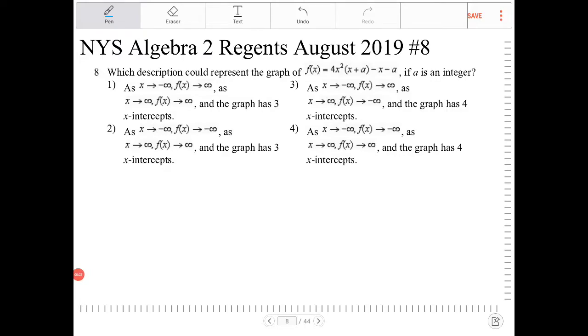Which description could represent the graph of f of x equal 4x squared times x plus a minus x minus a if a is an integer?